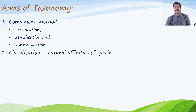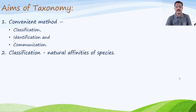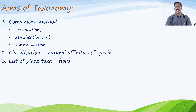The second aim is to provide classification based on natural affinities of species — observing and studying the resemblances between plant groups and providing a classification system accordingly. Next, to provide a list of plants by means of flora.